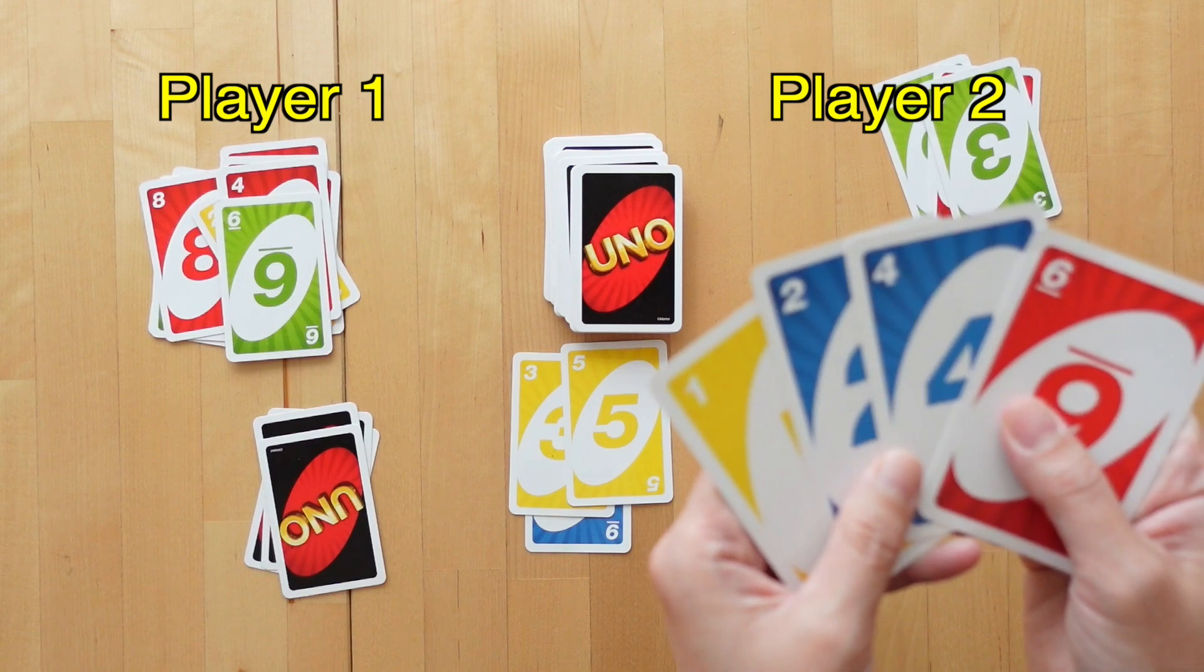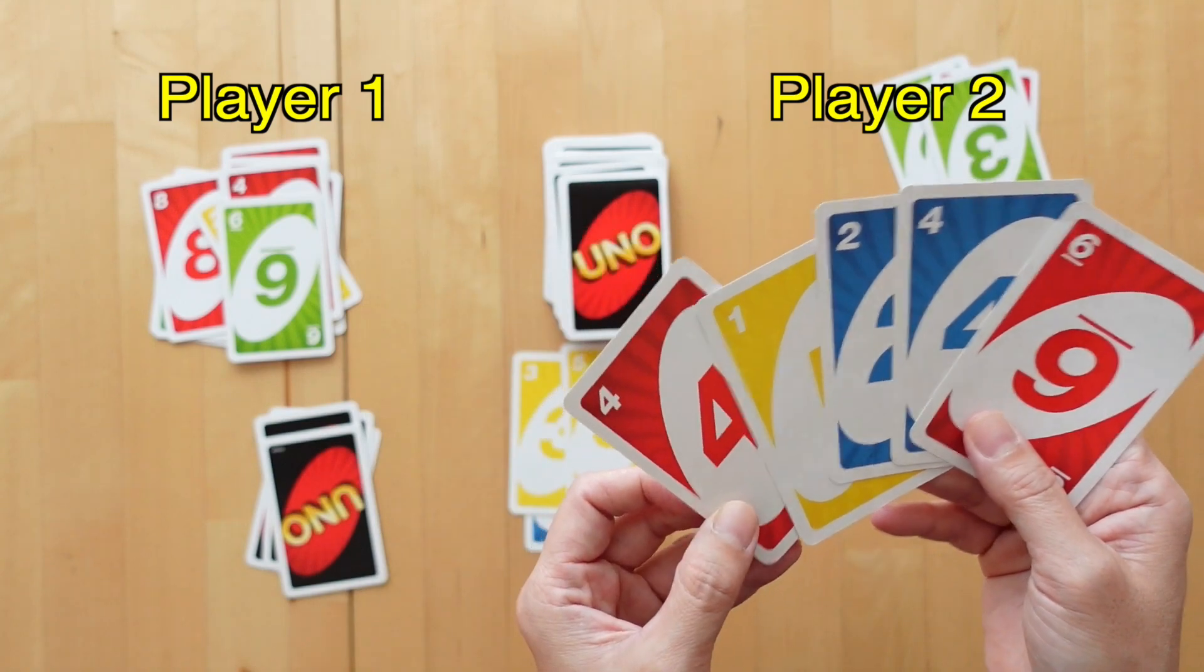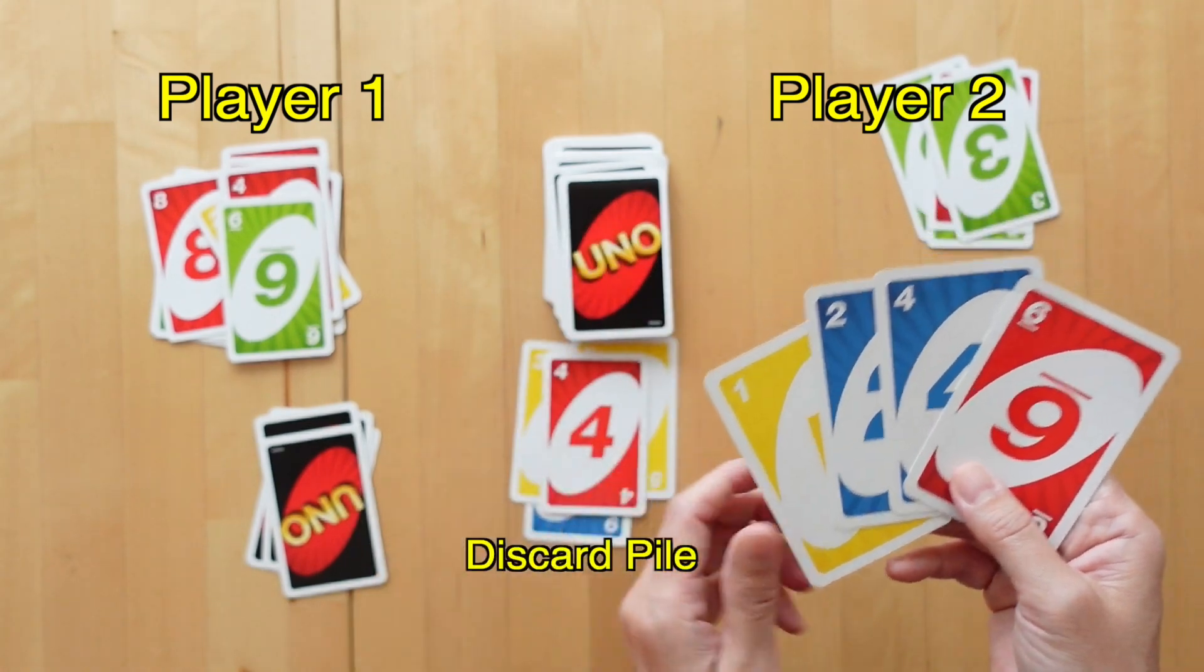Now it's back to player 2, who will pick a card from the draw pile. Still can't make a 20, so discard the 4.